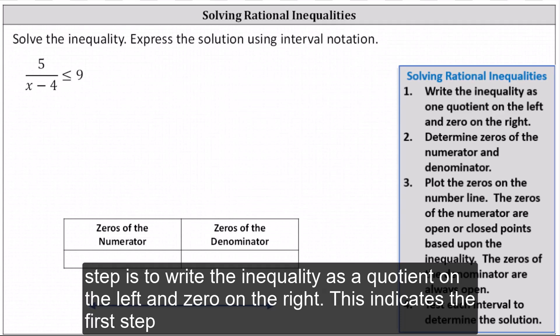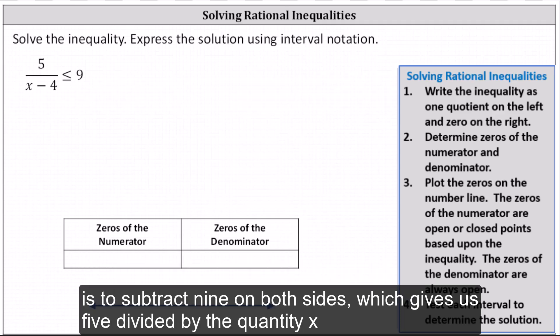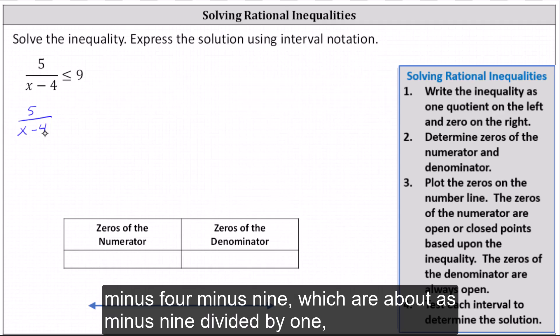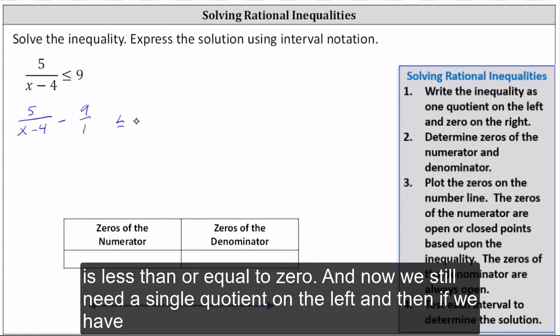This indicates the first step is to subtract nine on both sides, which gives us five divided by the quantity x minus four, minus nine, written as minus nine divided by one, is less than or equal to zero.